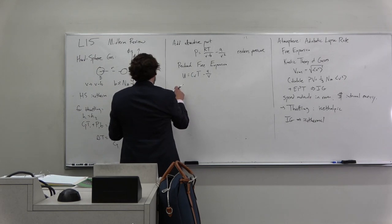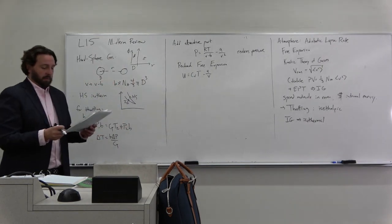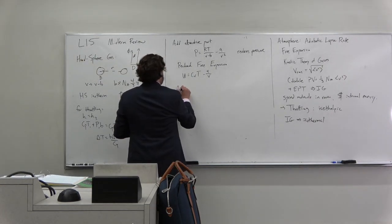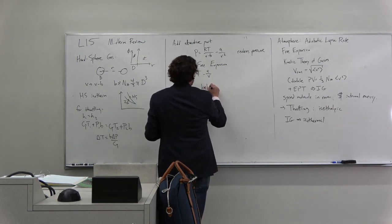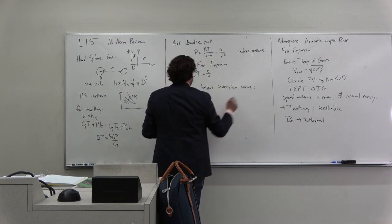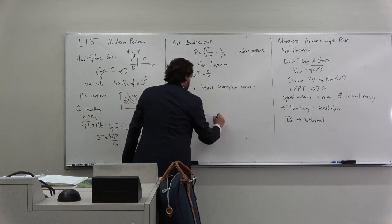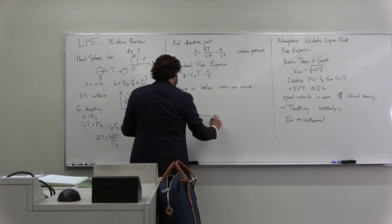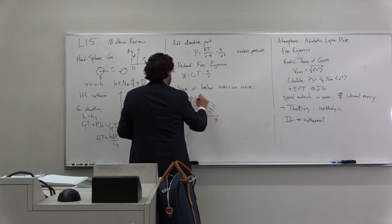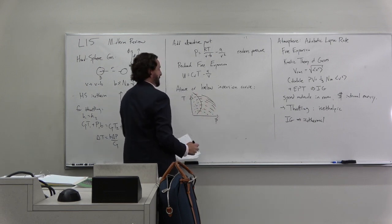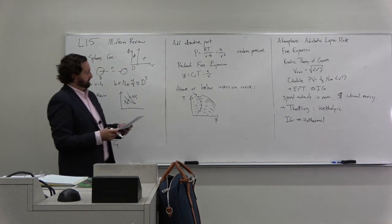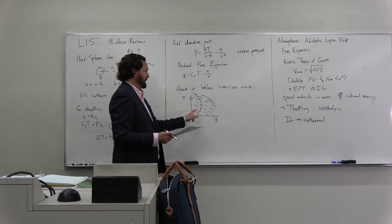For a van der Waals gas, we had CvT minus A over V, and that resulted in cooling for free expansion. How about for throttling? Cooling or warming depended on whether or not we were above or below the inversion curve. Remember, we had these lines on the T versus P diagram - we had some inversion curve. These were isenthalps.